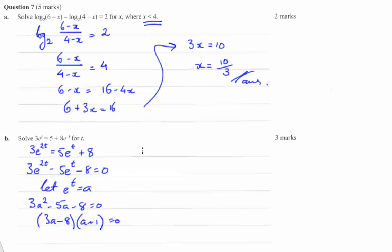And let's solve for a. So a equals 8 thirds or a equals negative 1.